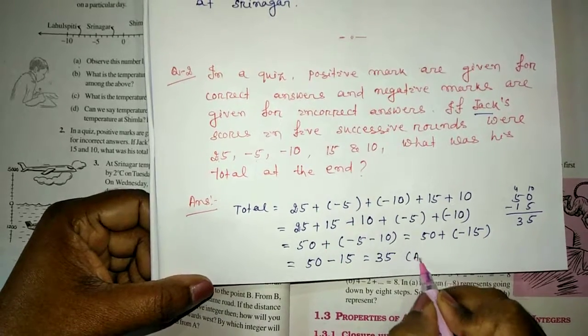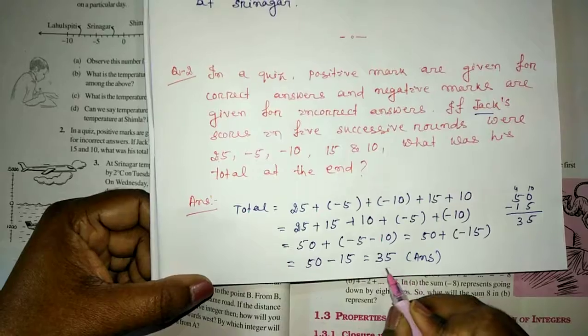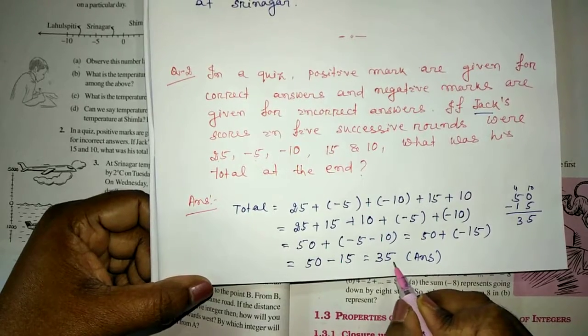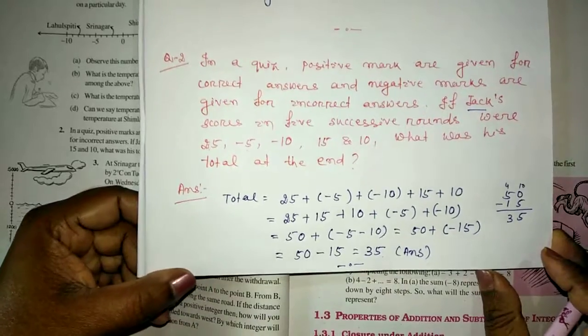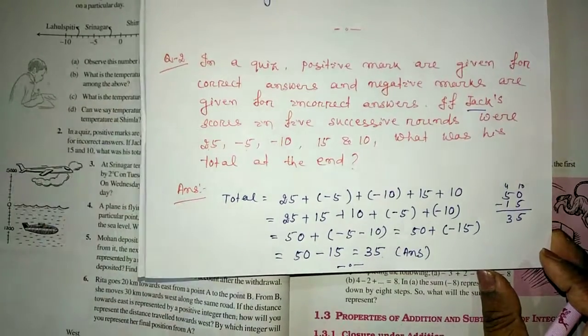This is the answer. The total score of Jack is 35. Thank you friends for watching. In my next video I will solve question number 3. Bye.